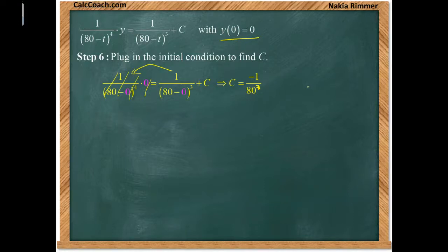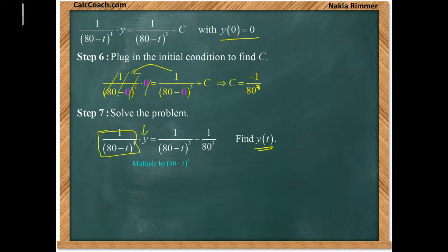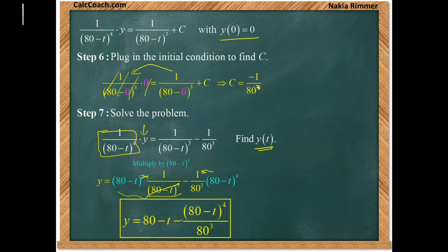Substituting C back in, we need to isolate y by multiplying both sides by (80 − t)^4. The first term simplifies — three powers of (80 − t) cancel — leaving (80 − t). The second term gives −(80 − t)^4/80^3. So the final answer is y = (80 − t) − (80 − t)^4 / 80^3, which tells us the amount of salt in the tank at any time t.